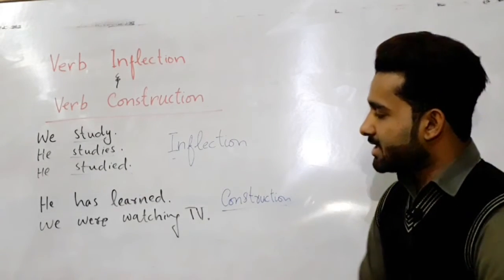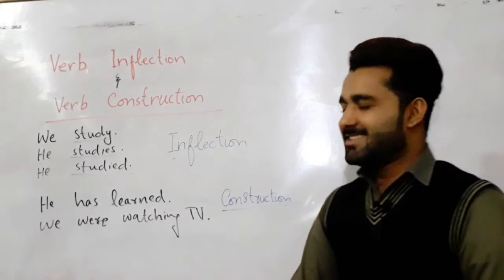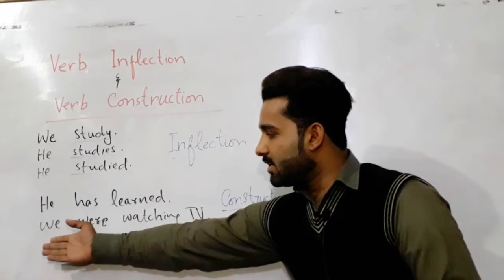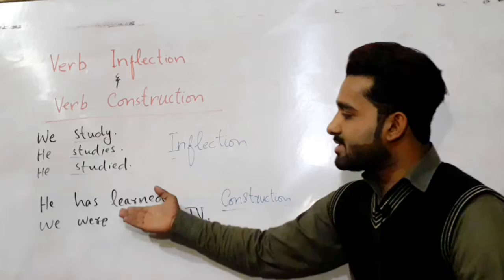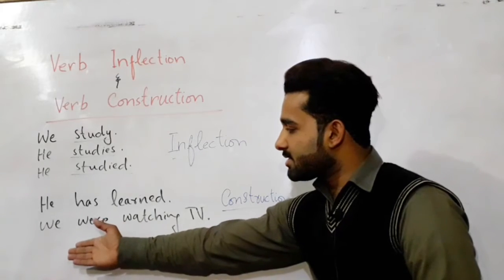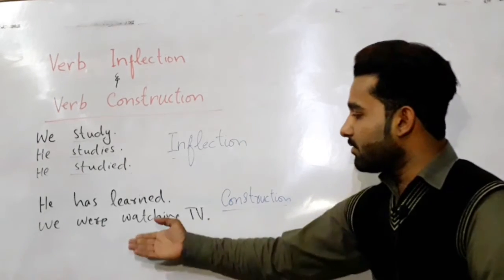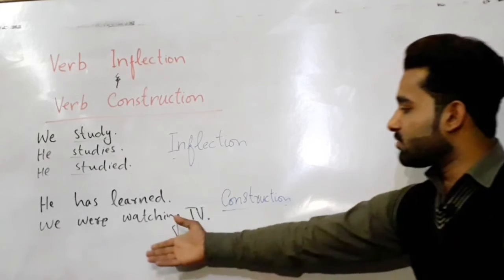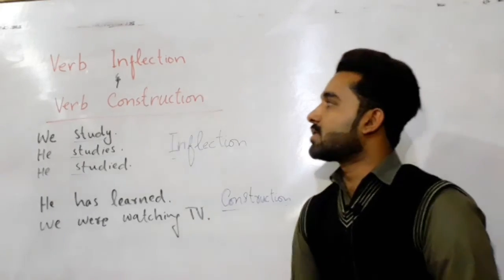In the next two sentences we have 'he has learned' and 'we were watching TV.' Here 'has' and 'learned' is the combination of a helping verb and a main verb. Similarly, 'were' and 'watching' is also a combination of a helping verb and a main verb. So by combining a helping verb and main verb, we call it construction. That's all about verb inflection and verb construction.